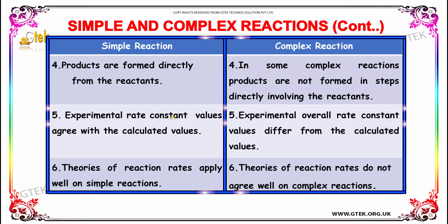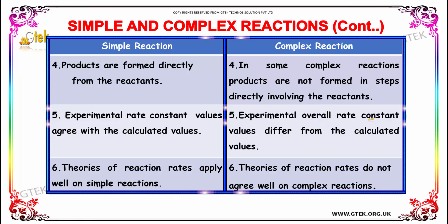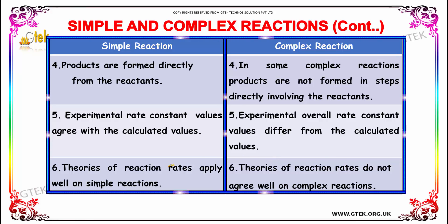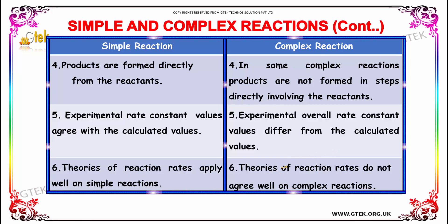In some complex reactions, products are not formed in steps directly involving the reactants. For simple reactions, the experimental rate constant values agree with the calculated values, whereas for complex reactions the experimental overall rate constant values differ from the calculated values. The theories of reaction rates apply well to simple reactions, but do not apply well to complex reactions.